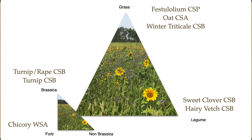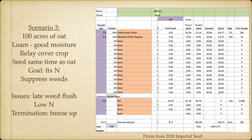Looking at the triangles again, now we're adding a little more diversity because we're dealing with some biennials. In this case we have 100 acres of oats on a loam soil. What we're going to do is look at a relay cover crop — seeded all at the same time as the oats — and we want to fix some nitrogen and suppress weeds. Our issues are late weed flush and low nitrogen, and we want to terminate at freeze up. We're going to use oats seeded at 30 seeds per square foot (110 pounds), add 2.8 pounds of subterranean clover giving us 4.5 seeds per square foot of clover, and half a pound of Italian ryegrass — just 2.4 seeds per square foot.